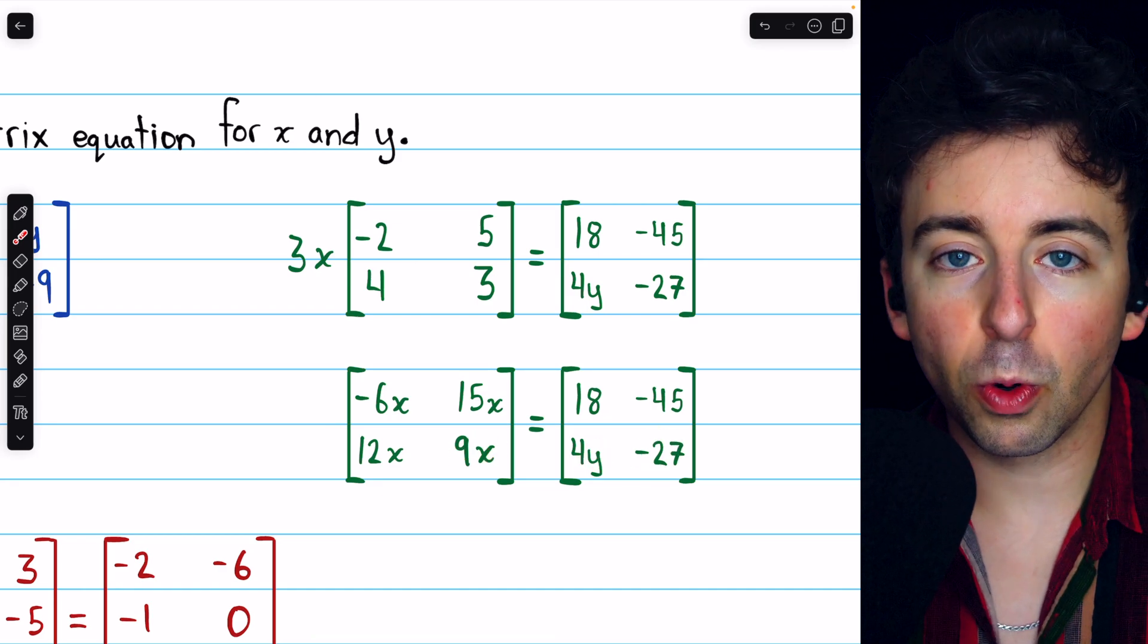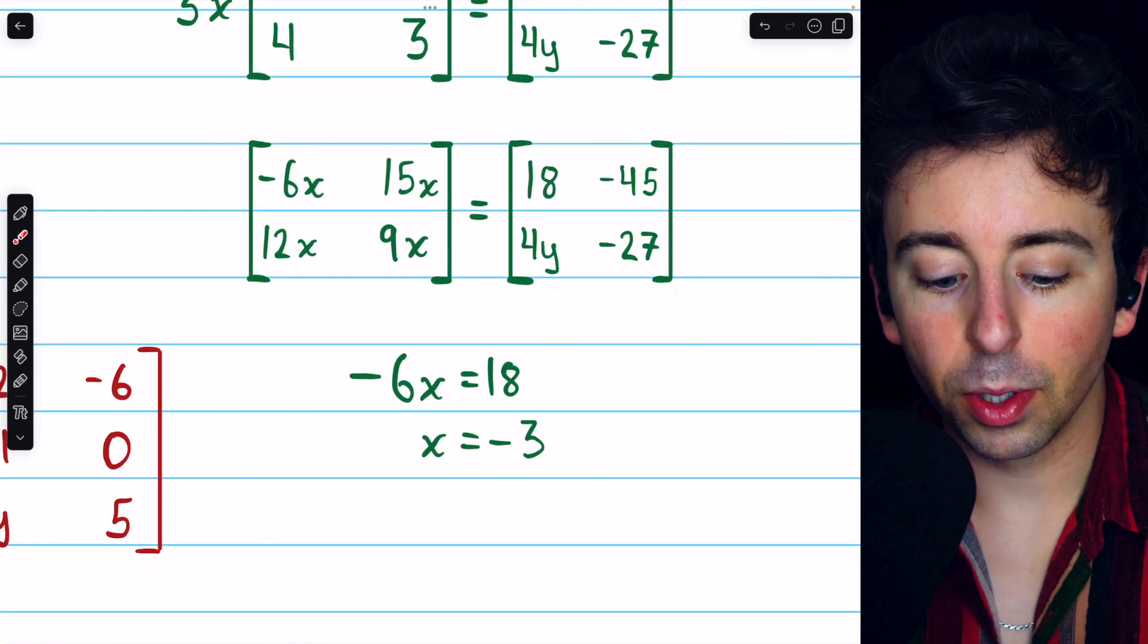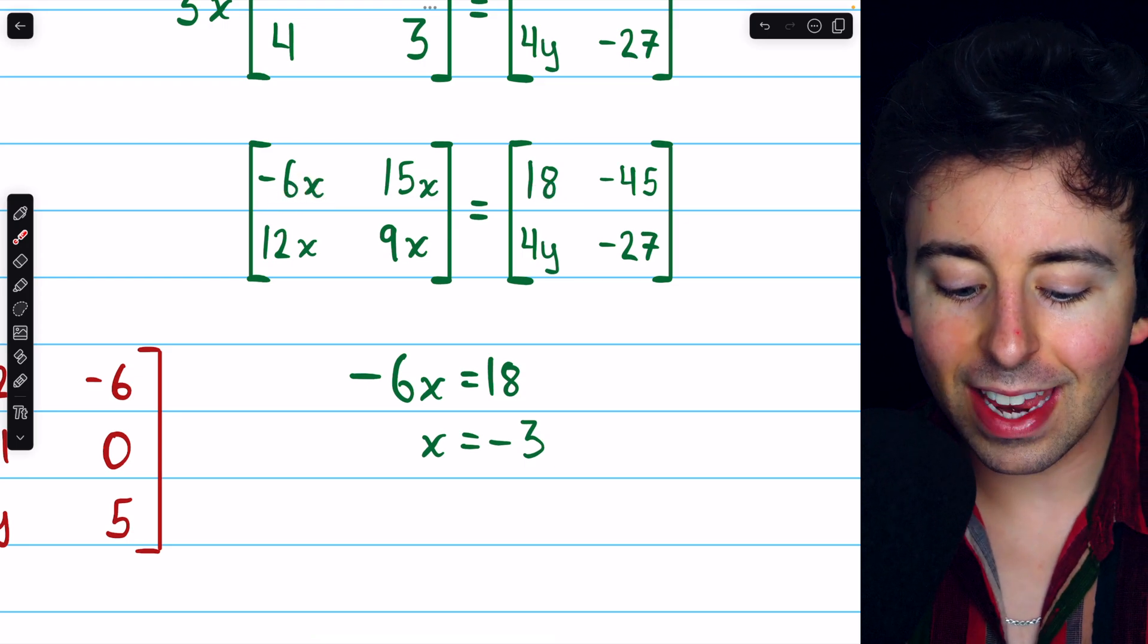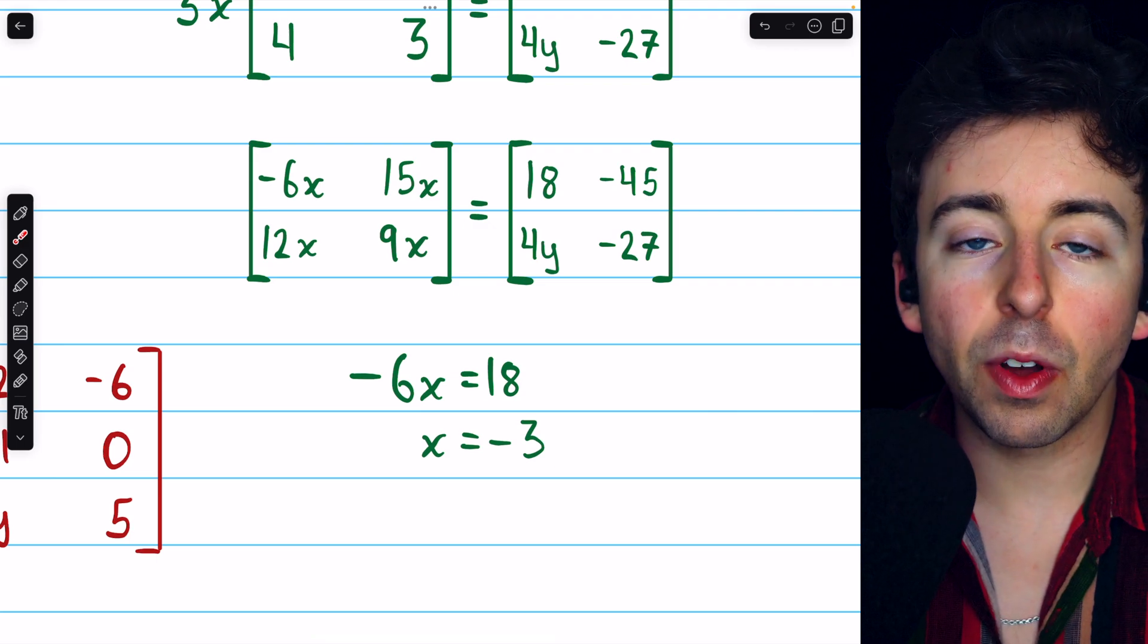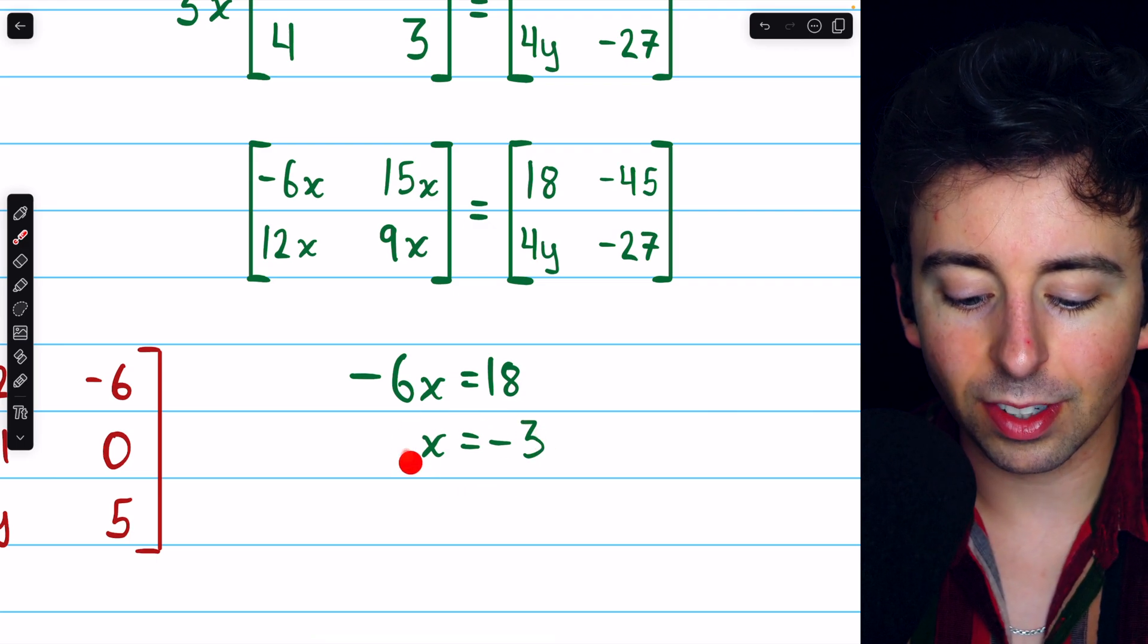We have several choices here for how to solve for x, but we'll get the same solution either way. For example, if we pick the entries in row 1, column 1, we get that negative 6x must equal 18. Dividing both sides by negative 6, we find that x equals negative 3.